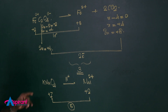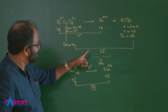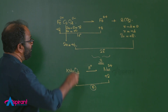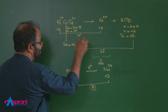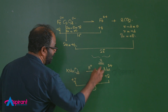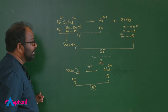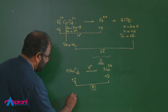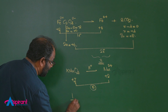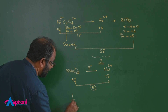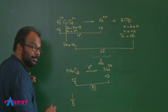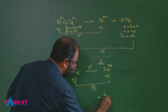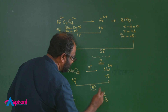The change in oxidation number for the species being oxidized is 3. Using the equivalence principle — the ratio of 1/5 is equal to 1/3 — relating moles of KMnO₄ to moles of ferrous oxalate.